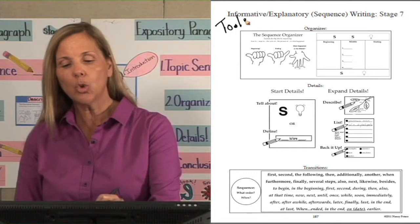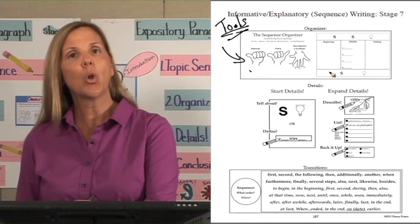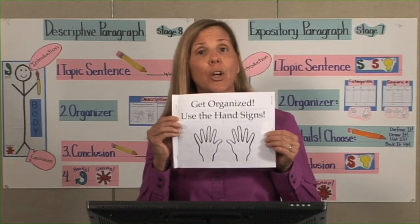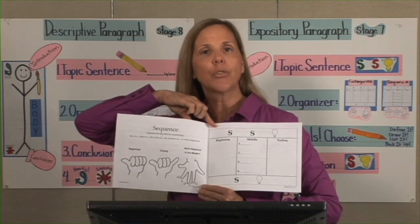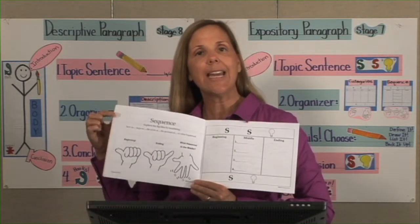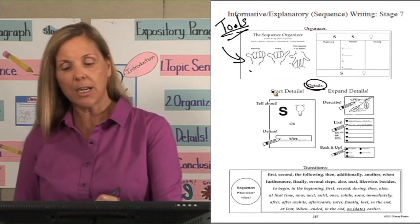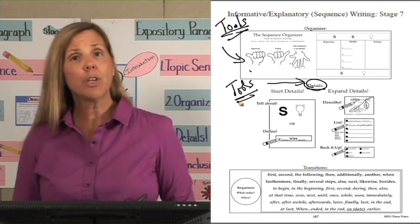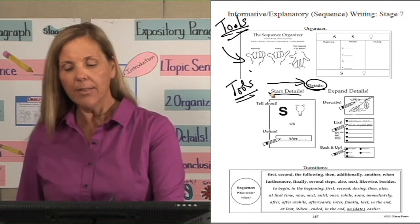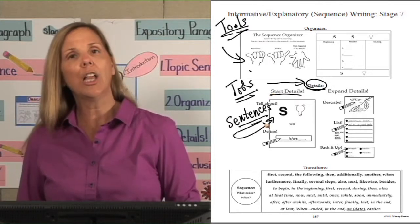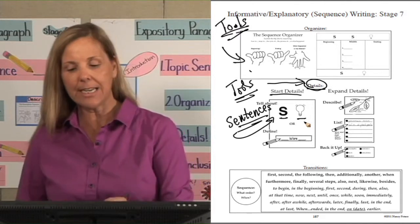On the facing page are all the tools needed for this lesson. You will need the hand sign for sequencing as well as a visual of the graphic organizer—you can use the flip book in your informative explanatory graphic organizer section of your manual. You have the organizer for the children to see. Next come the detail tools, which help students start their details. Once they've recorded their ideas, they need to form sentences. The S light bulb tool helps them come up with a complete sentence about each detail.